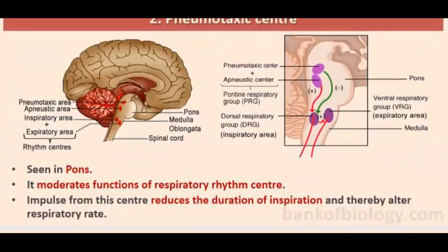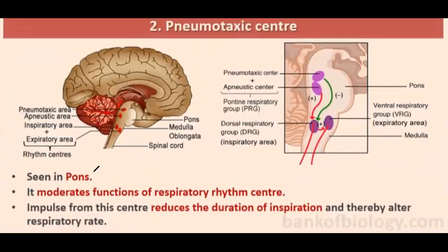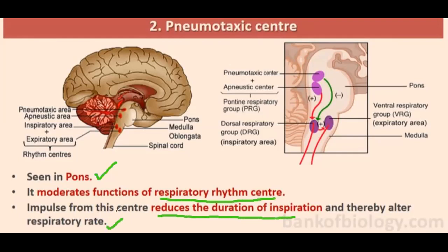The pneumotactic center is seen in the pons region. It moderates the function of the respiratory rhythm center. Impulses from this center reduce the duration of inspiration and thereby alter the respiratory rate. According to physiological conditions — such as exercise or stress — the pneumotactic center controls fast or slow breathing.